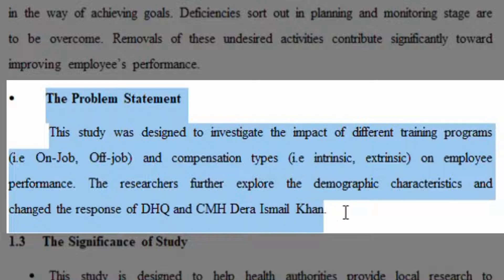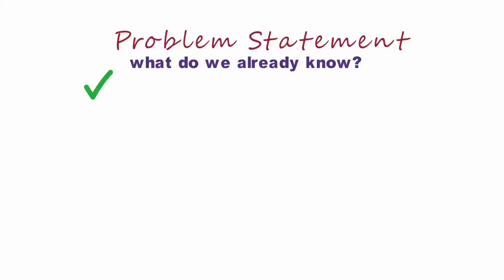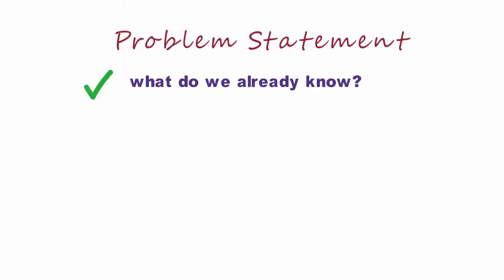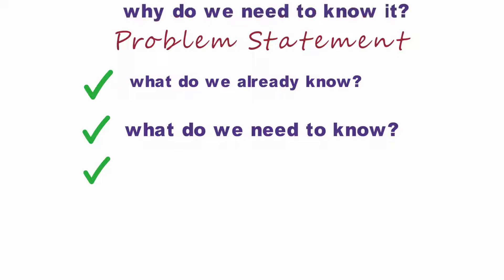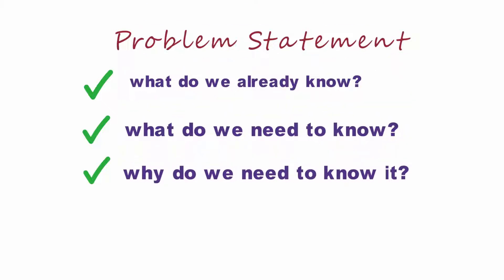An effective problem statement is concise and concrete. It should put the problem in context — what do we already know? Describe the precise issue that the research will address — what do we need to know? Show the relevance of the problem. Why do we need to know it? Set the objectives of the research — what will you do to find out?